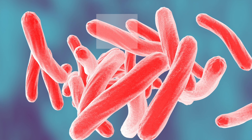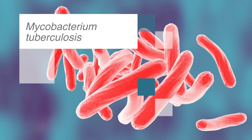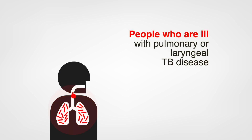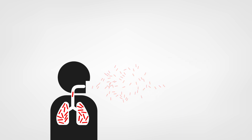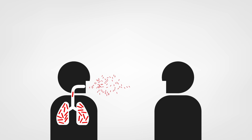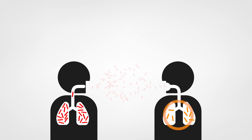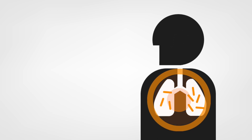Tuberculosis, also called TB, is caused by Mycobacterium tuberculosis and is spread from person to person through the air. People who are ill with pulmonary or laryngeal TB disease can spread infectious particles into the air when they cough, sneeze, shout, laugh, or sing. Infection occurs when another person inhales these particles and they reach the alveoli of the lungs, where an immune response is initiated. In most cases, the immune response successfully maintains containment in a dynamic process to suppress further multiplication of the bacteria.